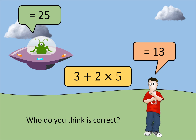Welcome to this video lesson tutorial on BIDMAS, or BODMAS — looking at order of operations. BIDMAS is all to do with a way of working out a calculation given multiple operations in a sum. B stands for brackets, then we've got indices — so powers or exponents — then divide, multiply, add, or subtract. That's our acronym for order of operations.